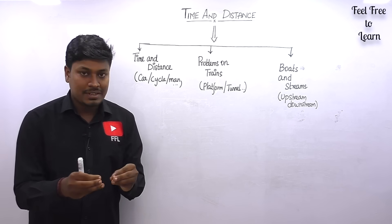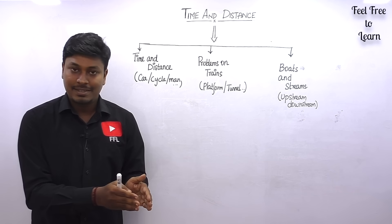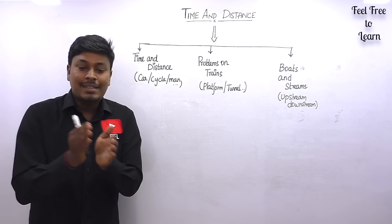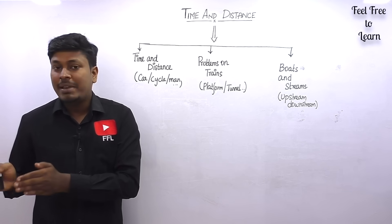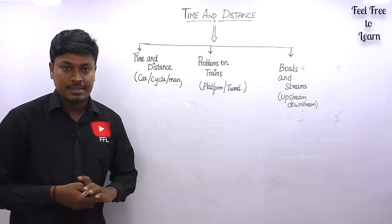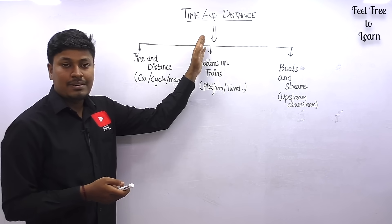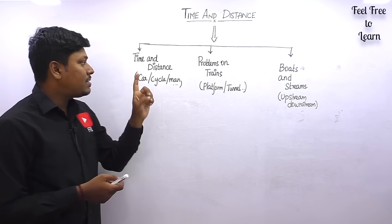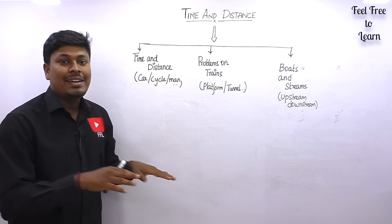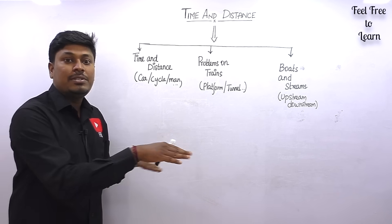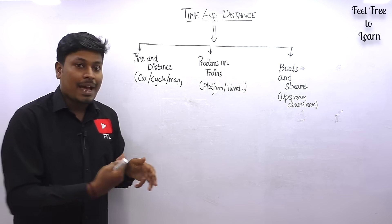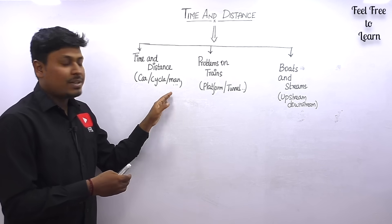If you want to solve the toughest questions, you first need to be strong on the basics — not 99%, be 100% strong on the basics. Then solve easy level questions, then medium level, and then the toughest level. That way you can easily learn the topic. This topic is categorized into three different sections: basic questions based on cars, cycles, or a man running.